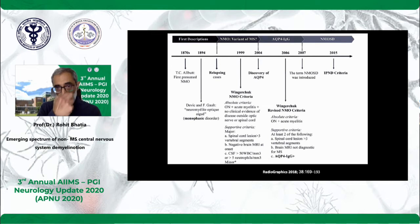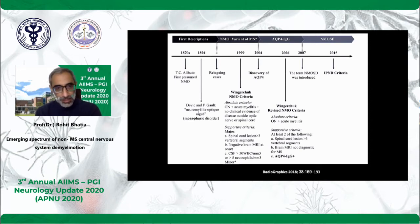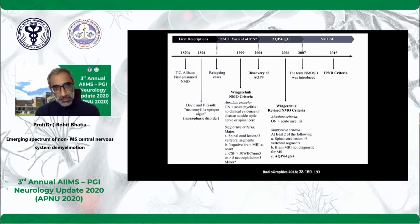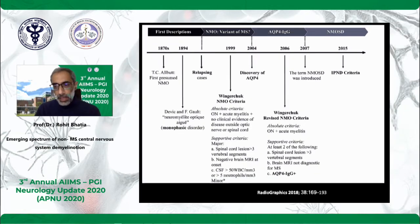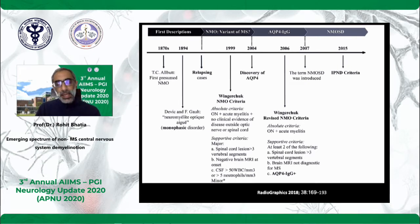We've come a long way in NMO spectrum disease. Dr. Lal would remember we were told that Devic's disease is a monophasic illness — if you see someone with paraplegia and severe vision loss, think it's a Devic's disease and it will be a single-time disease that never relapses. We came a big way from there, and as people started to realize it is a relapsing disease, with the advent of the aquaporin-4 antibody, we transitioned to a much wider understanding, which further broadened with the new criteria.